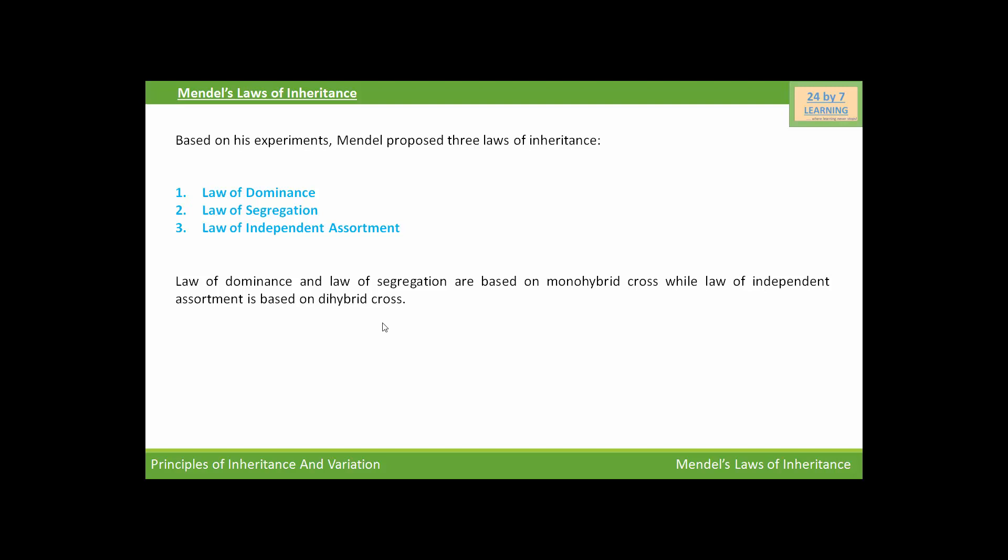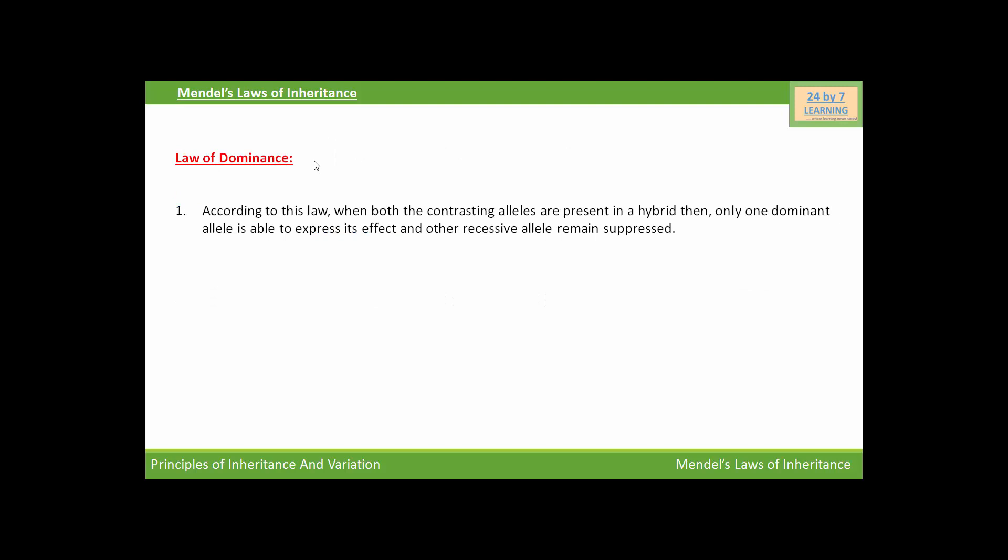In this video, we will discuss only the Law of Dominance. According to this law, when both contrasting alleles are present in a hybrid, only one dominant allele is able to express its effect and the other recessive allele remains suppressed. This law explains expression of only one parental character in F1 generation and expression of both parental characters in F2 generation.